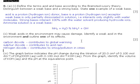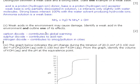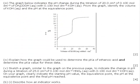The graph below indicates pH change during the titration of 20 cm³ of 0.1 molar ethanoic acid with 0.1 molar potassium hydroxide. From the graph, identify the volume of potassium hydroxide and the pH at the equivalence point. We have to look for the equivalence point here.